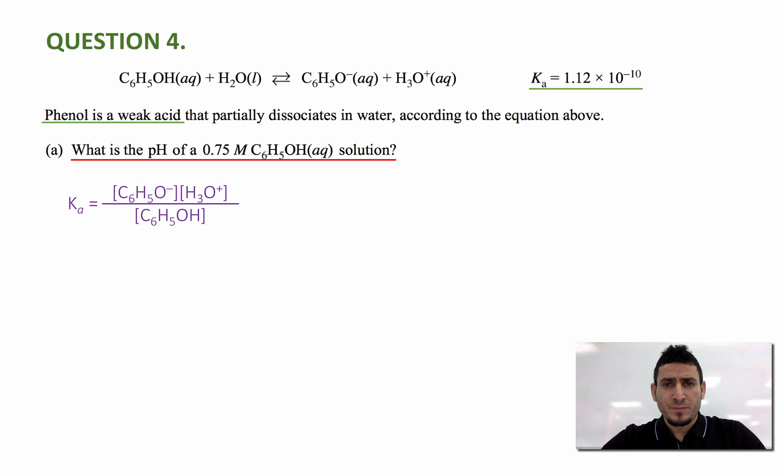I can write the equation again and I will be drawing the ICE table. The ICE table stands for initial, change, and equilibrium. Initially, I have 0.75 molar of phenol and 0 molar of phenolate and hydronium.